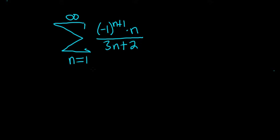We have an infinite sum, and the question is, does the sum converge or diverge? You can see it's an alternating series because we have the negative 1 to the n plus 1.